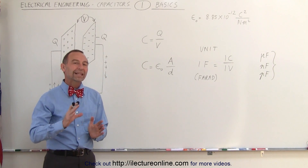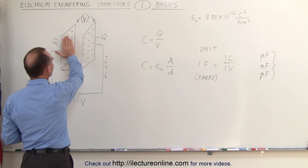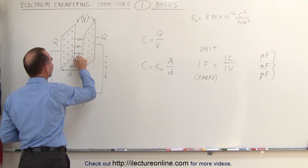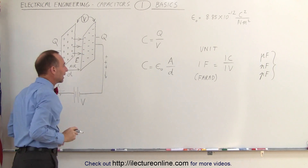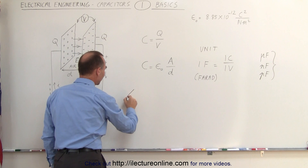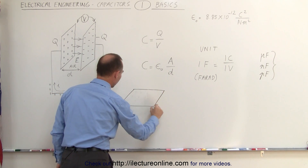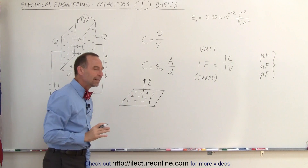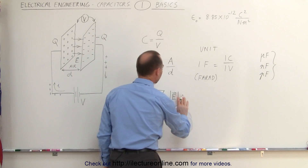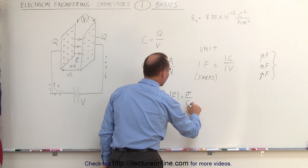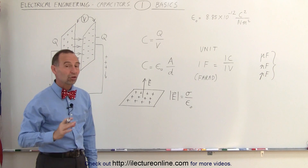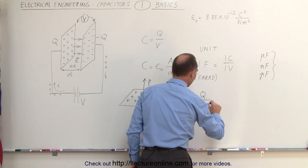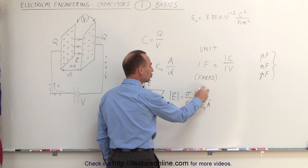Now let's talk about the capacitor in terms of the electric field between the plates. Because there's positive charge on one side and negative charge on the other, there will be an electric field between the plates, directed from the positive charge to the negative charge. The magnitude of the electric field can be defined as the charge density divided by epsilon sub-naught, which can be written as the charge Q divided by epsilon sub-naught times the area A, since charge density is charge per unit area.